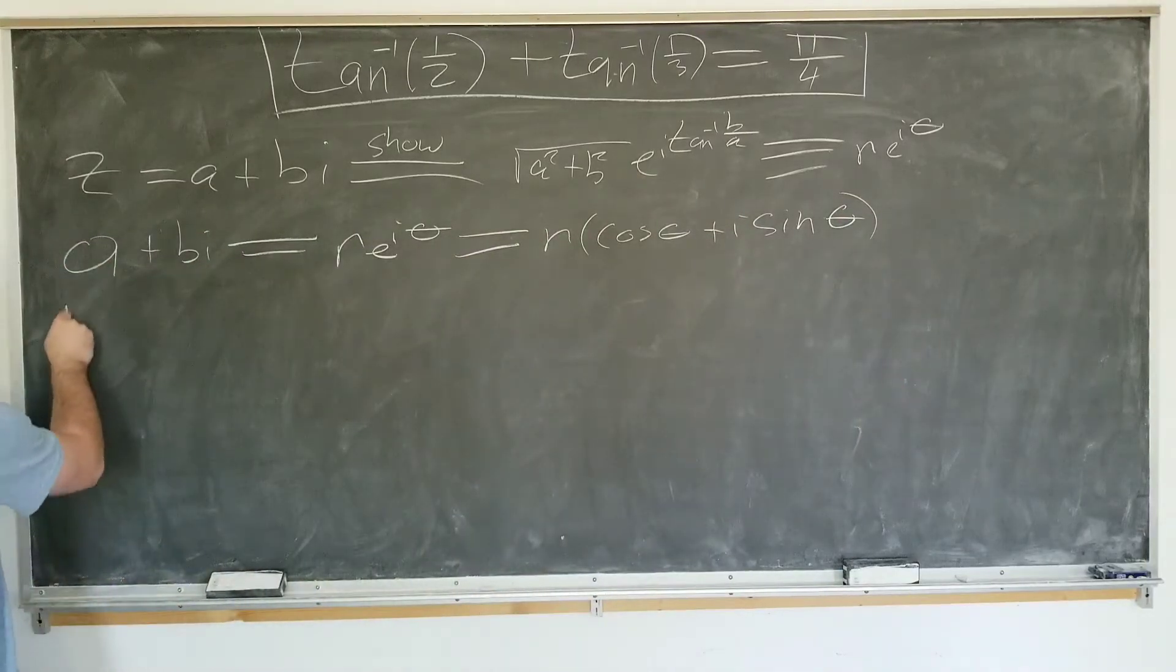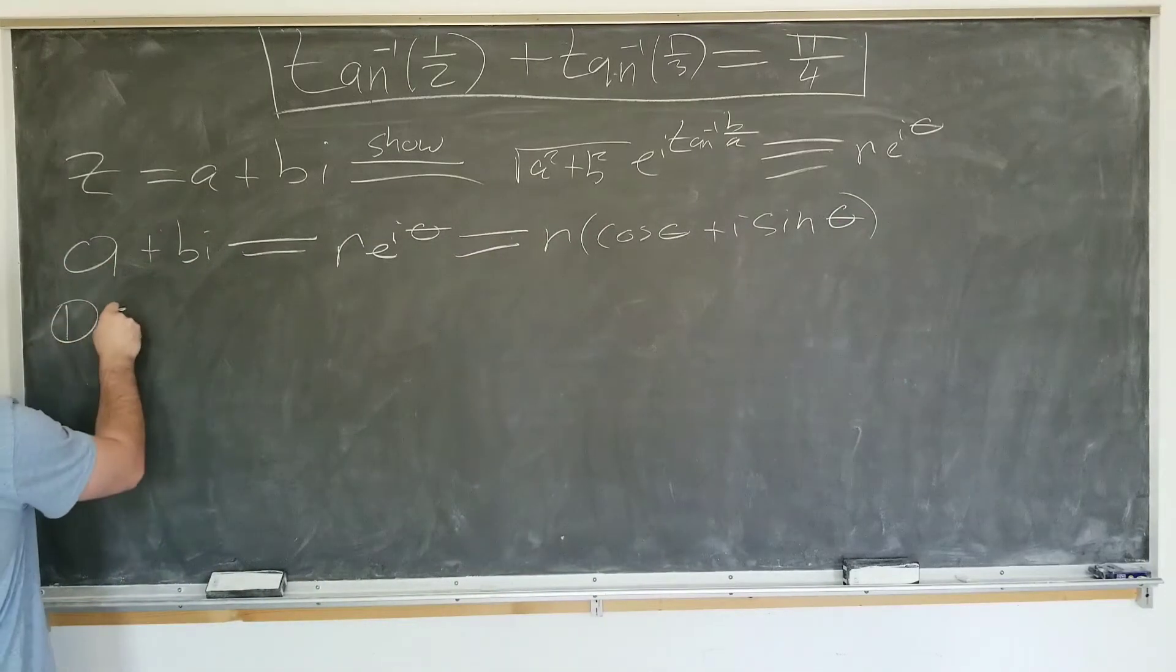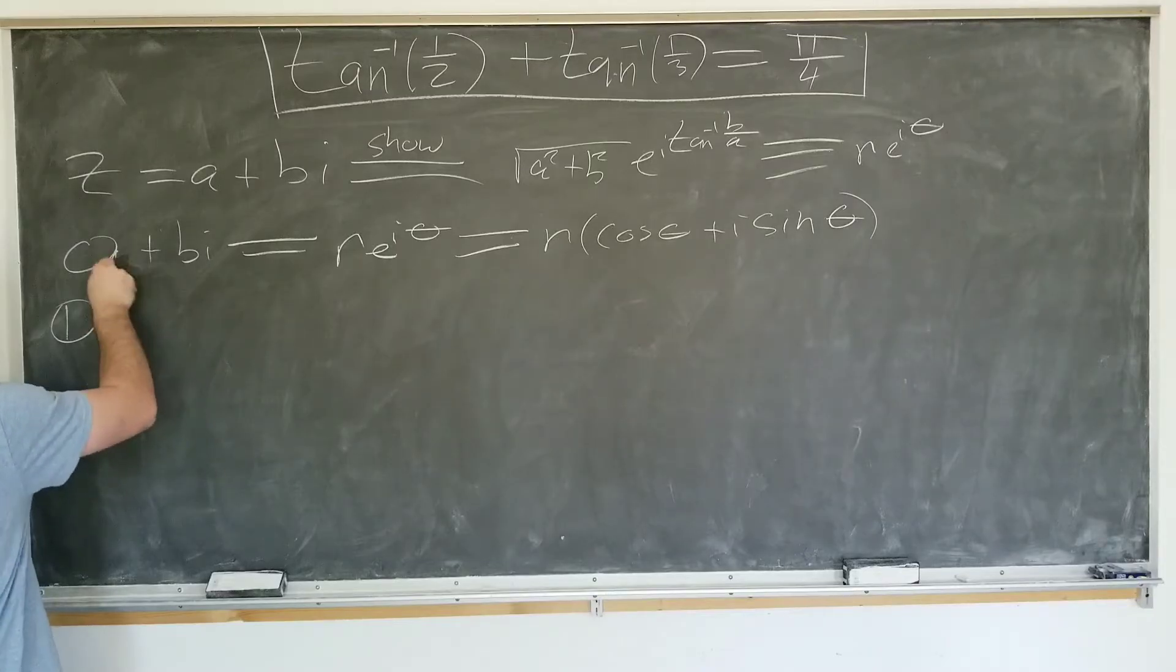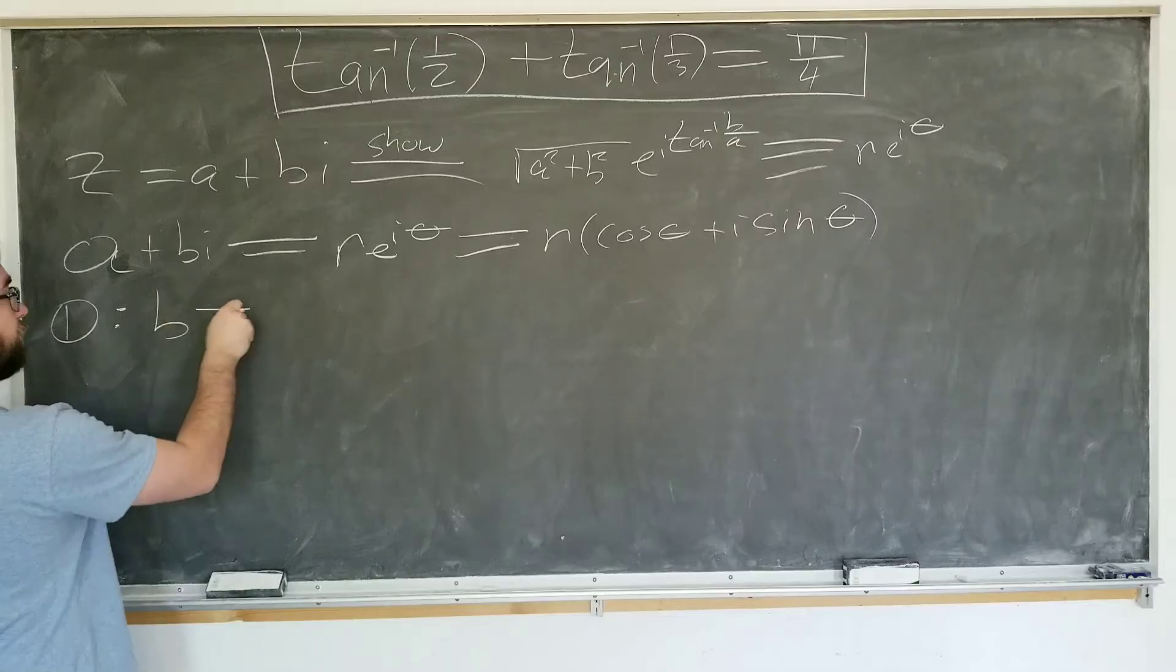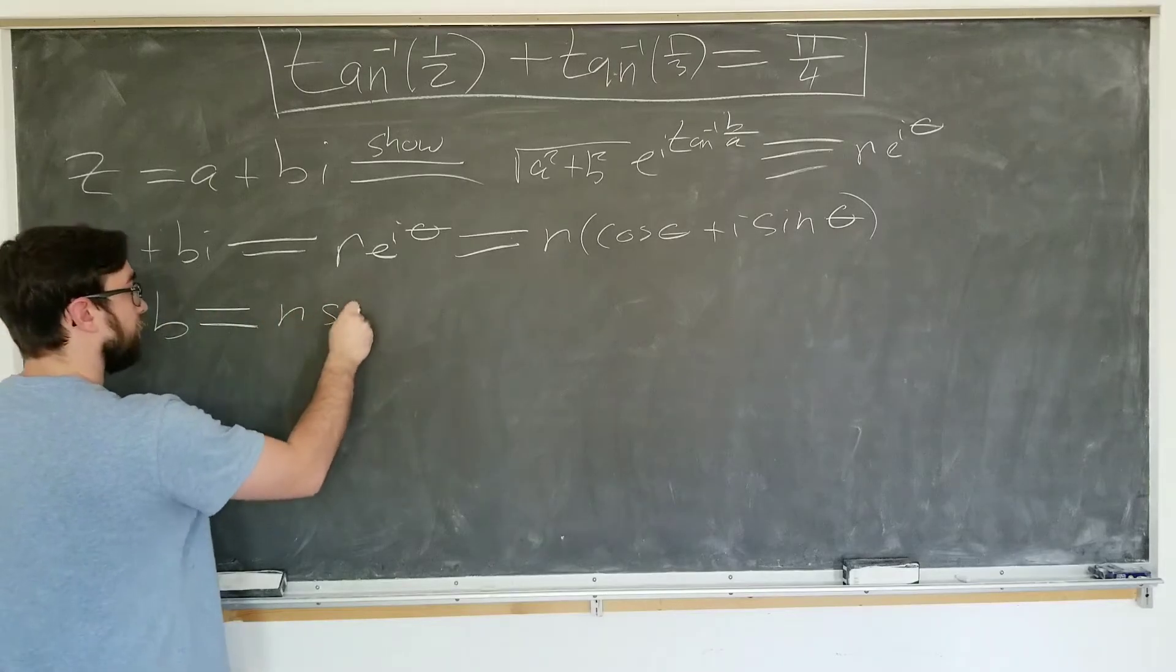And now we're going to write two equations. So we have equation one. Equation one tells us that b is equal to r sine theta.